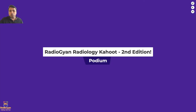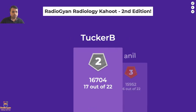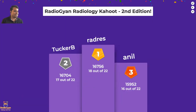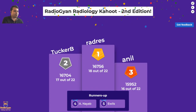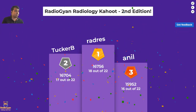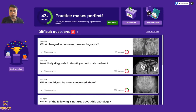Quiz results: With 15,952 points, Anil is in third place; Tucker is second with 16,700 points; and Rad Res wins with 16,756 points. Congratulations to all three — I'll leave my email in the YouTube comments so you can claim your book. Thank you all for being part of this quiz. Please leave feedback in the comments, let me know what we can do better, and if you have suggested video topics feel free to share. See you in the next one.